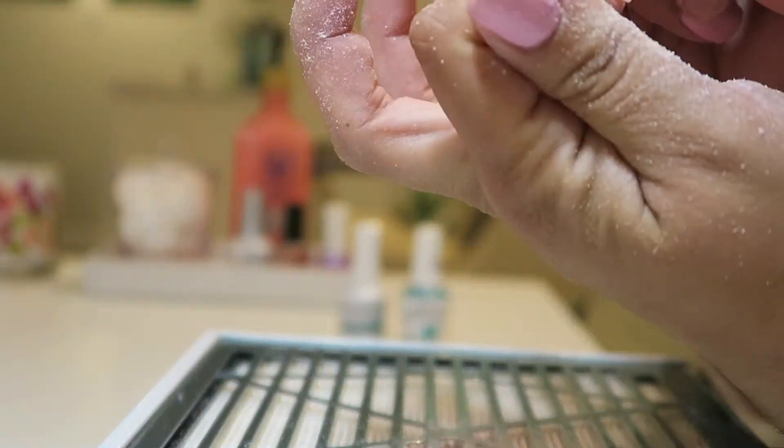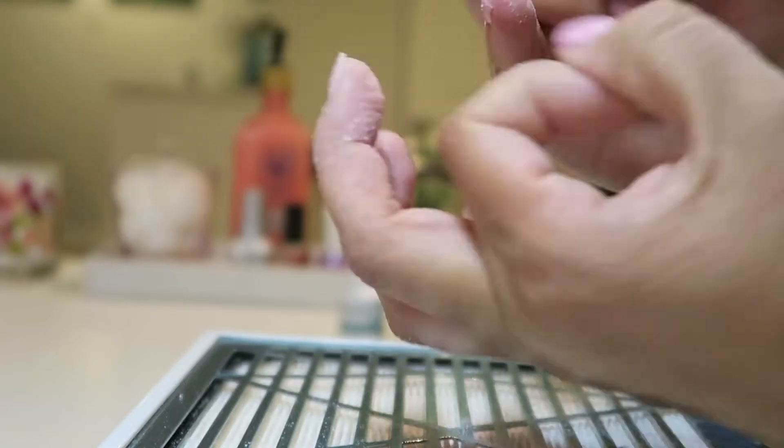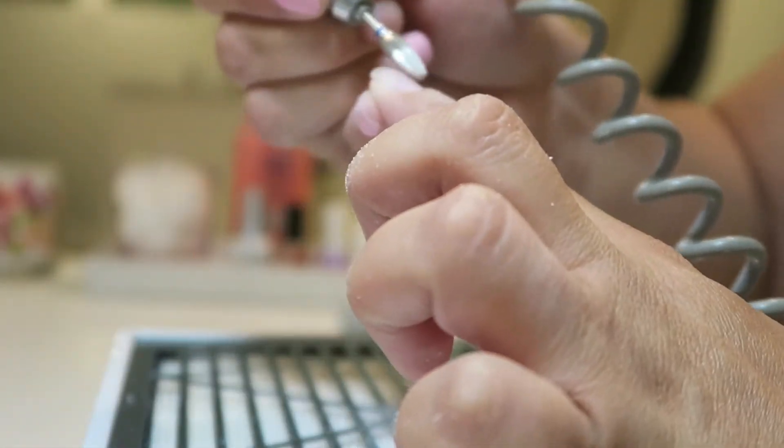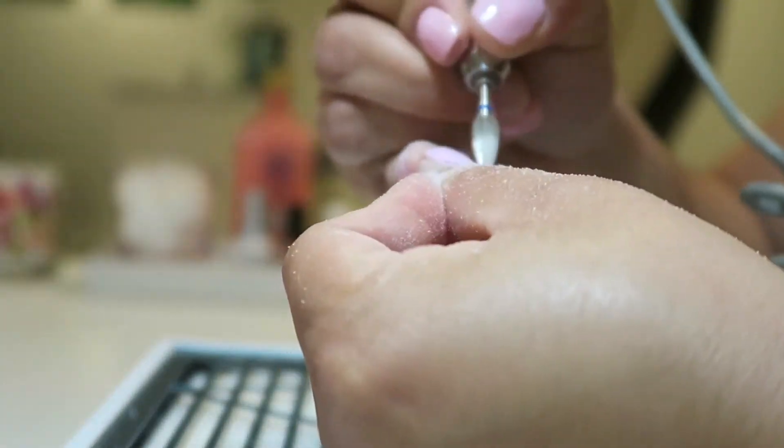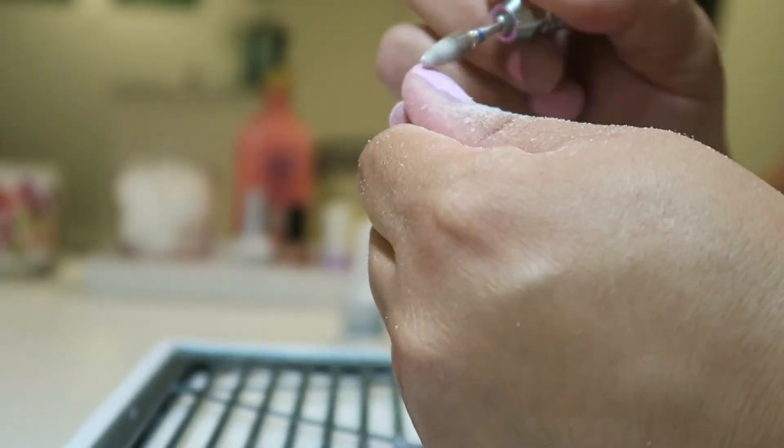I'm also going to be debulking my acrylic so that it's nice and thin, so that when I do my new layers of dip with the acrylic powder it's not super thick, since I do keep my nails nice and short.